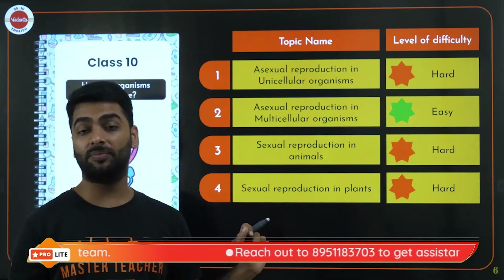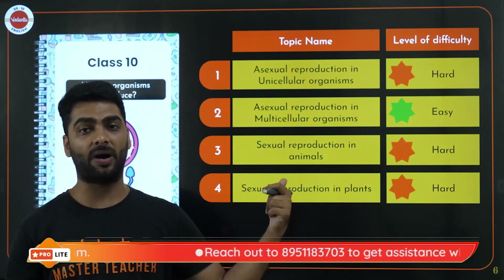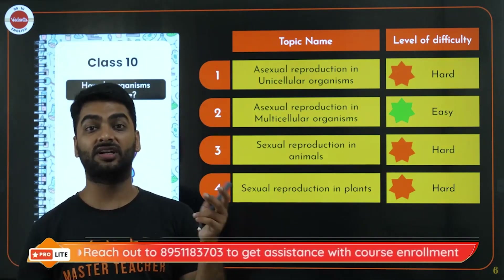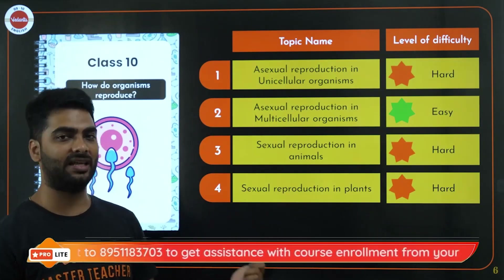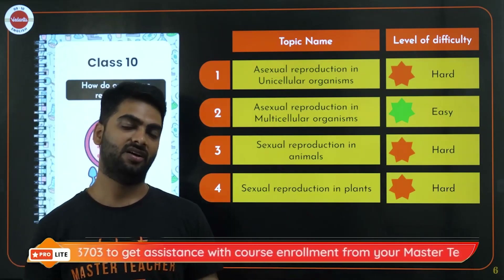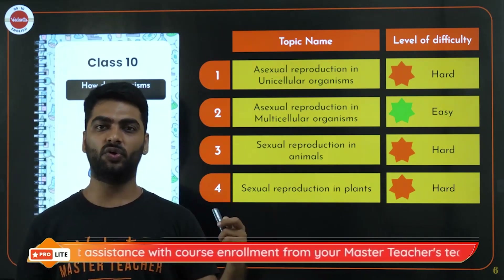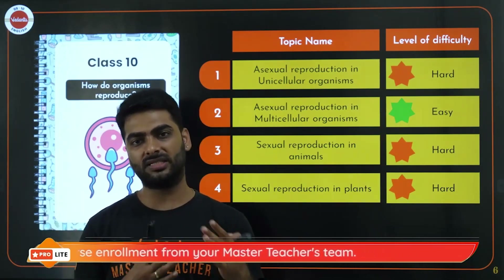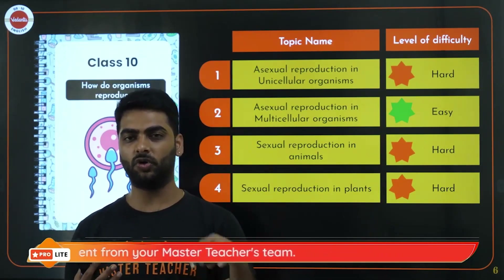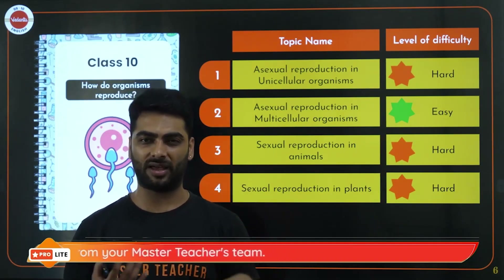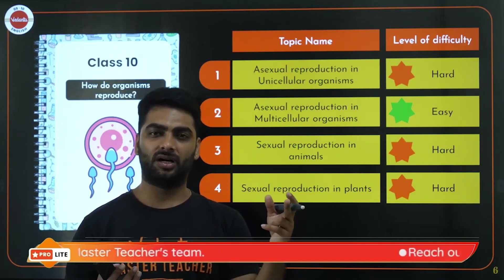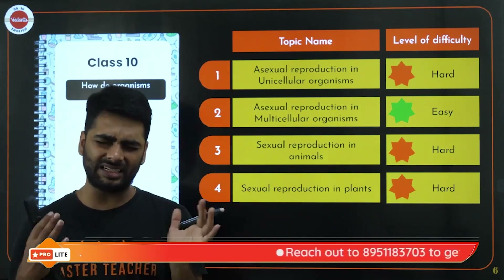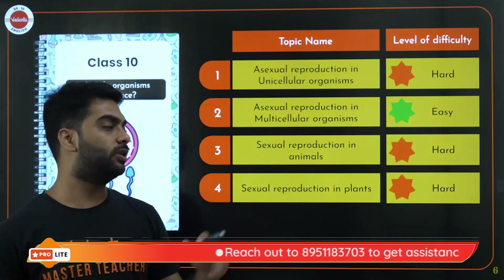Sex determination is also part of sexual reproduction. Sexual reproduction in plants includes double fertilization, which is actually a little difficult — you have to visualize how double fertilization happens: the pollen tube, the male nuclei, synergids, and polar nuclei. Knowing this, you'll understand where to focus the most in this chapter.